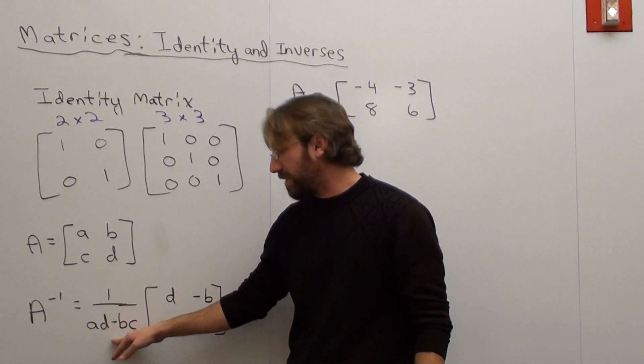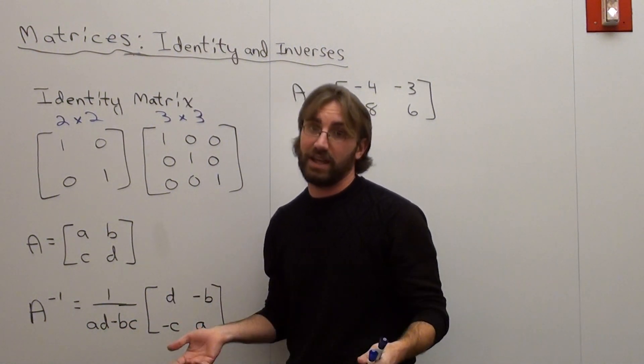It means that the determinant is zero, which means you can't divide by that, which means it doesn't have an inverse. Let me say that again. If this AD minus BC, whatever it ends up being, is zero, then it doesn't have an inverse.